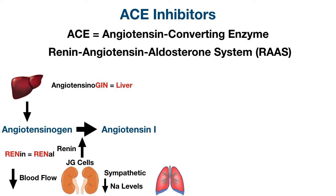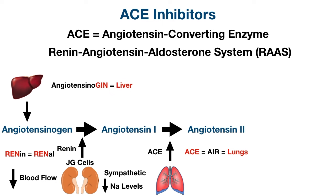There's another enzyme called angiotensin-converting enzyme, or ACE. One of the main locations for this enzyme is the endothelium of blood vessels in the lungs — think of 'ACE' and 'air' to remember its primary location is in the lungs. As the name suggests, angiotensin-converting enzyme converts angiotensin 1 into angiotensin 2.